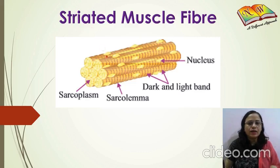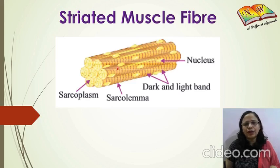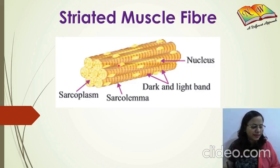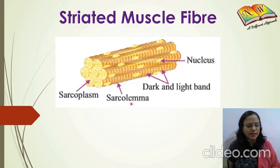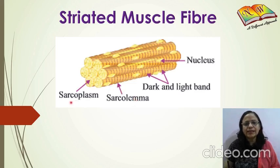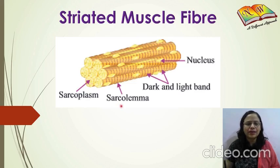Each cell has many nuclei, and these nuclei are located towards the periphery — that means towards the outer boundary of the cells. Every muscle fiber is surrounded by a membrane known as the sarcolemma. The cytoplasm is known as sarcoplasm — sarcoplasm is the cytoplasm present in striated muscle fibers, and sarcolemma is the outer membrane that surrounds the cells of striated muscle fibers.